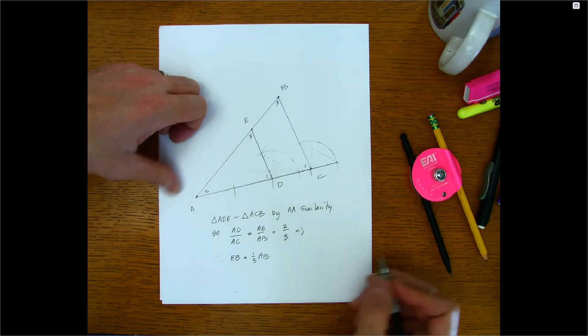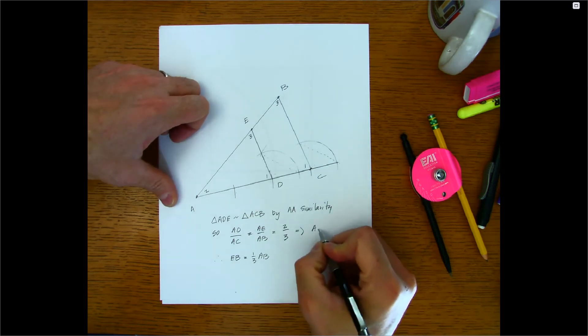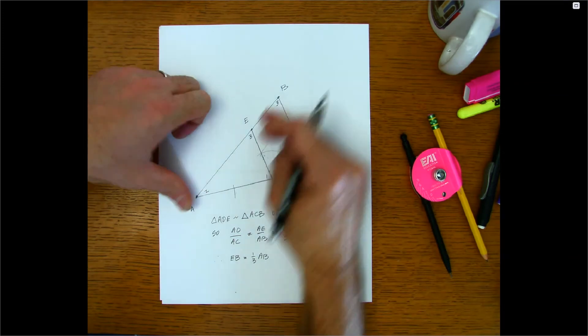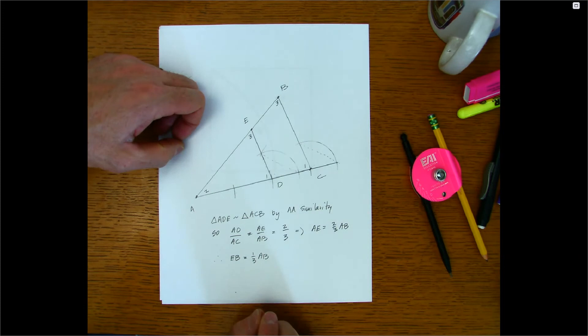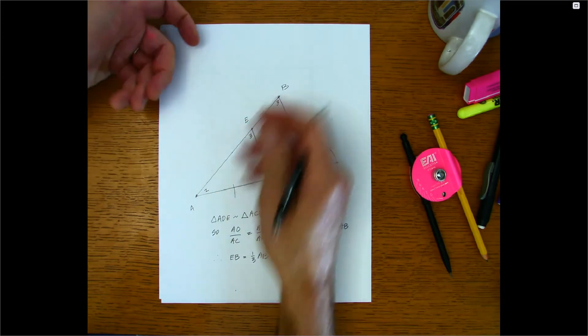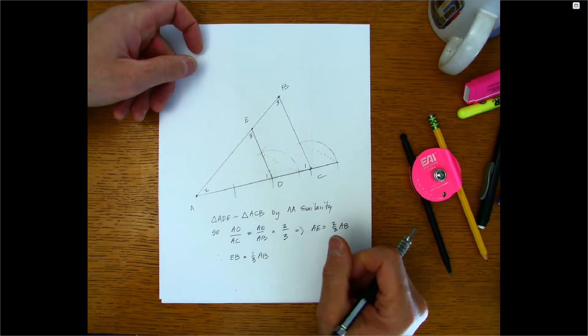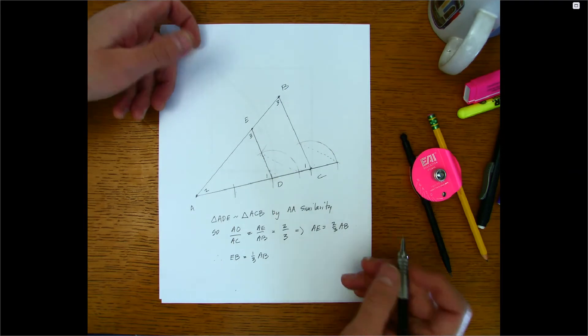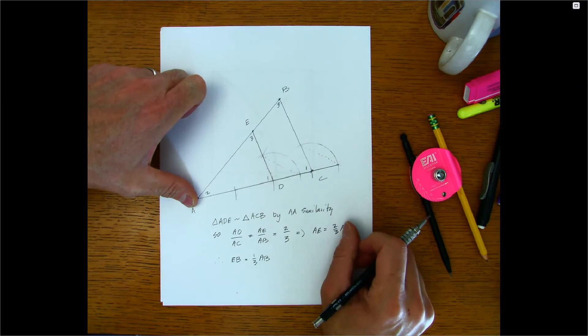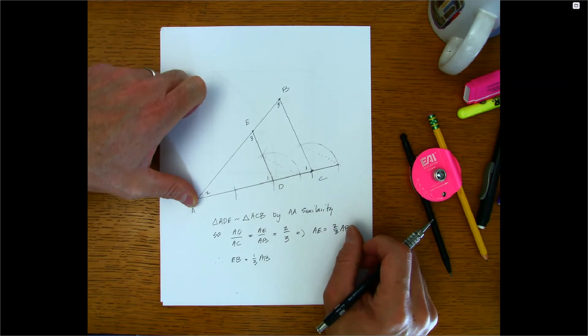I guess here I would say AE is equal to 2 thirds AB, right? So this is 2 thirds of AB. So that must mean that EB is 1 third of AB. And so there you have it. There's one way that you can trisect. And in fact, you can find any rational division of a segment this way by just doing as many copies as you need to find the rational number that you want.